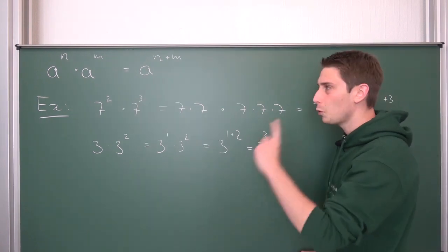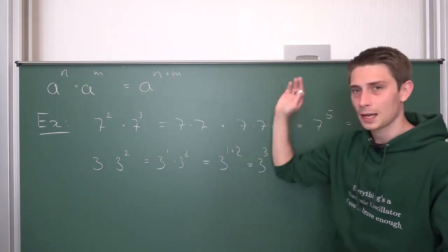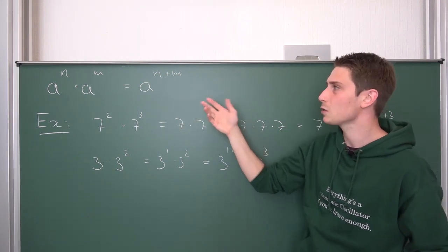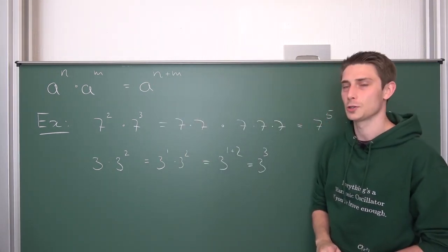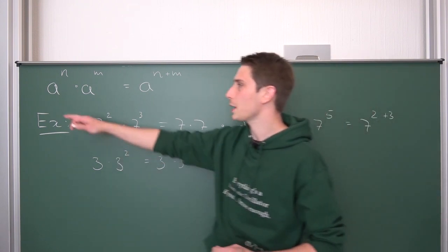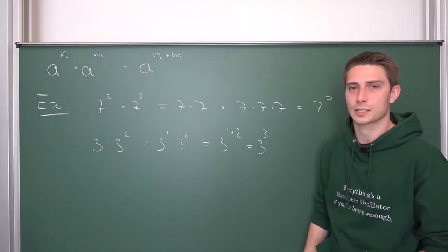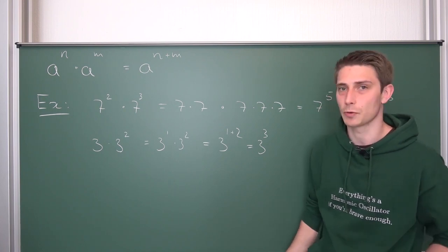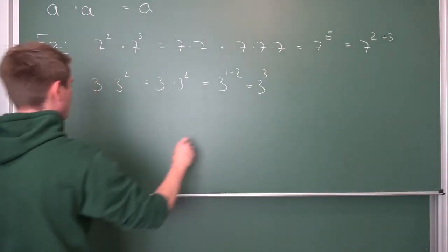But here's one more really cool consequence of this theorem. This rule holds for all n and m's. It also holds for zero. Let us expand our knowledge for the case where we have something raised to the zero power, because we don't know what that means yet — it's just a number multiplied with itself zero times, which doesn't make any sense right now. But it will in a second. Let us take a look at this example once again.